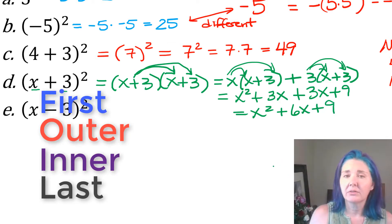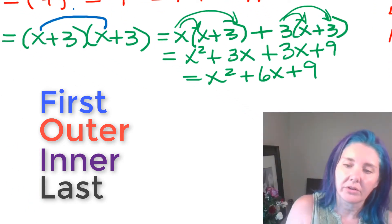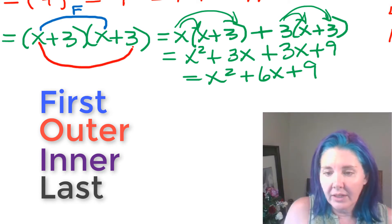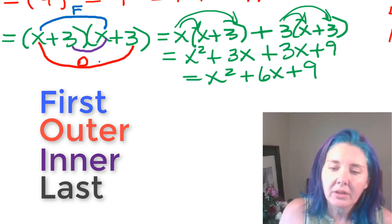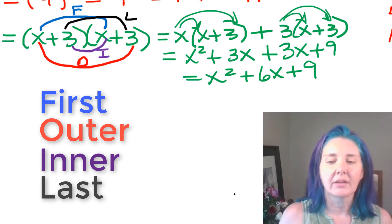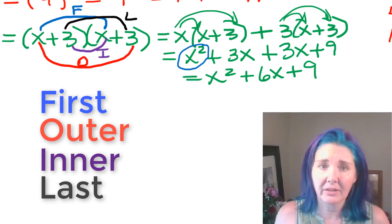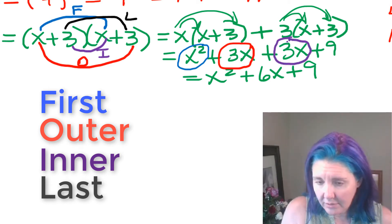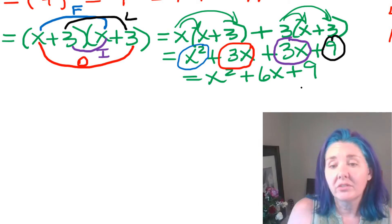You might also have learned something called FOIL, and it turns out the same. FOIL tells us to multiply the first term times the first term — that's F. Then multiply the outer terms — that's O. Then multiply the inner terms — that's I. And then multiply the last terms — that's L. First times first is x times x, which gives x squared. Outer times outer is three times x, or three x. Inner times inner is also three times x, giving another three x. Last times last is three times three, which is nine. So we still get the same result using FOIL.